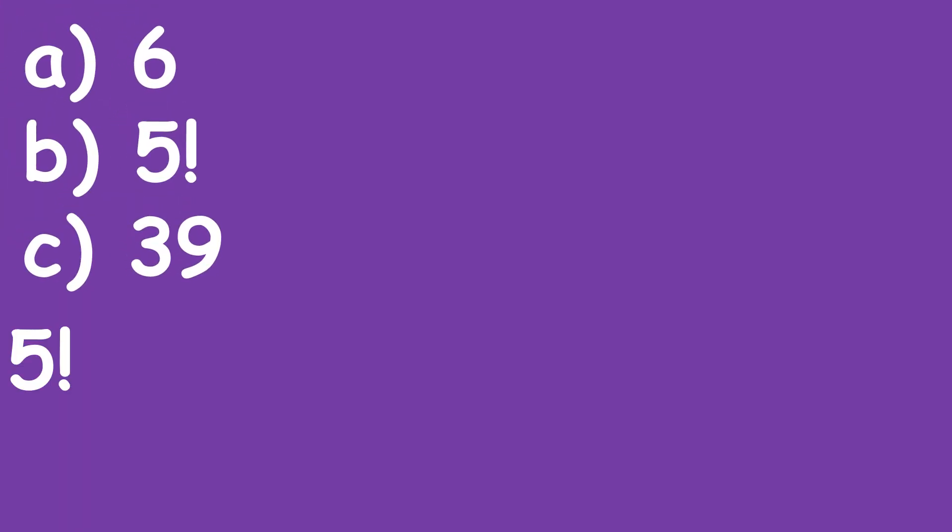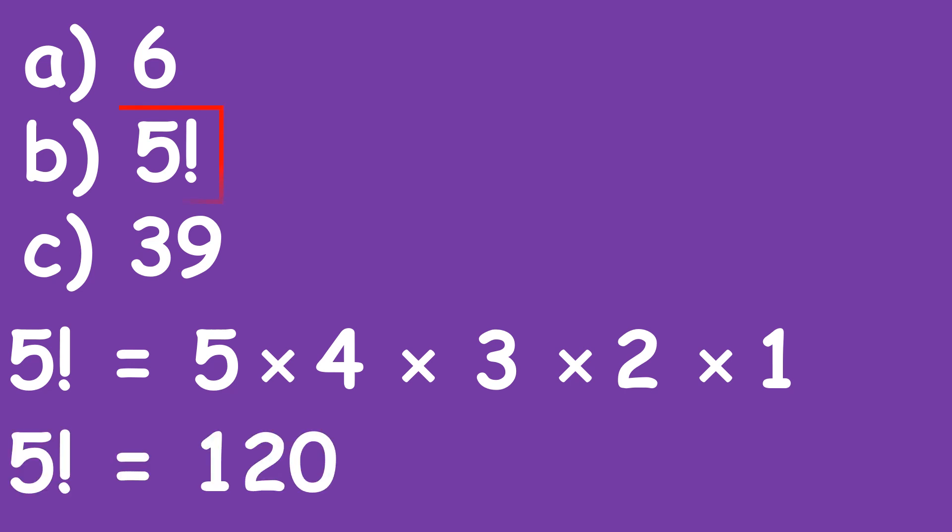Now looking at the alternatives here, we cannot see 120 but we can see 5 factorial and 5 factorial means 5 times 4 times 3 times 2 times 1. So 5 times 4 is 20. 20 times 3 is 60. 60 times 2 is 120. Therefore our answer is 120 and this is represented by 5 factorial.